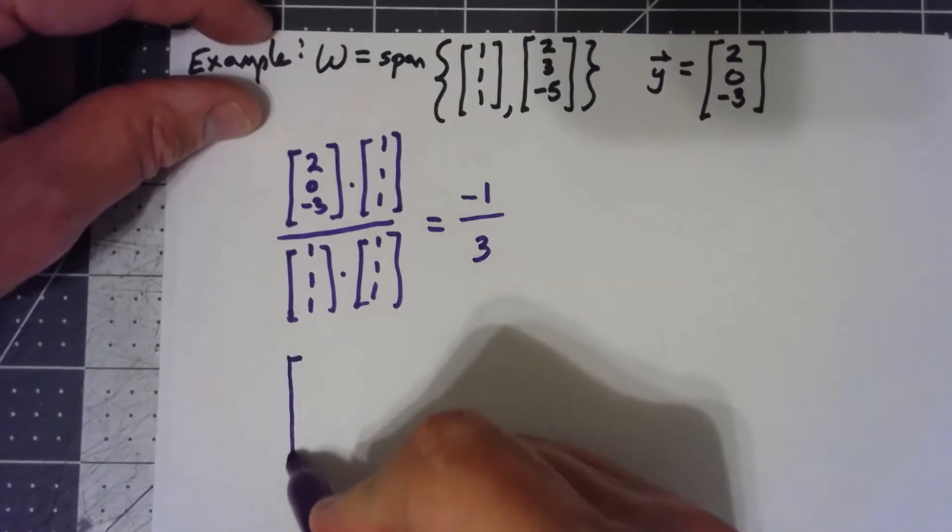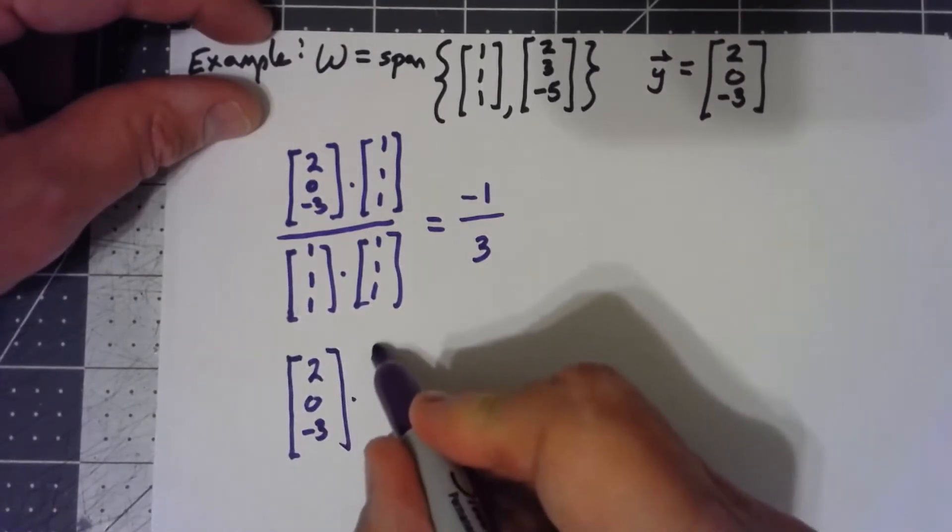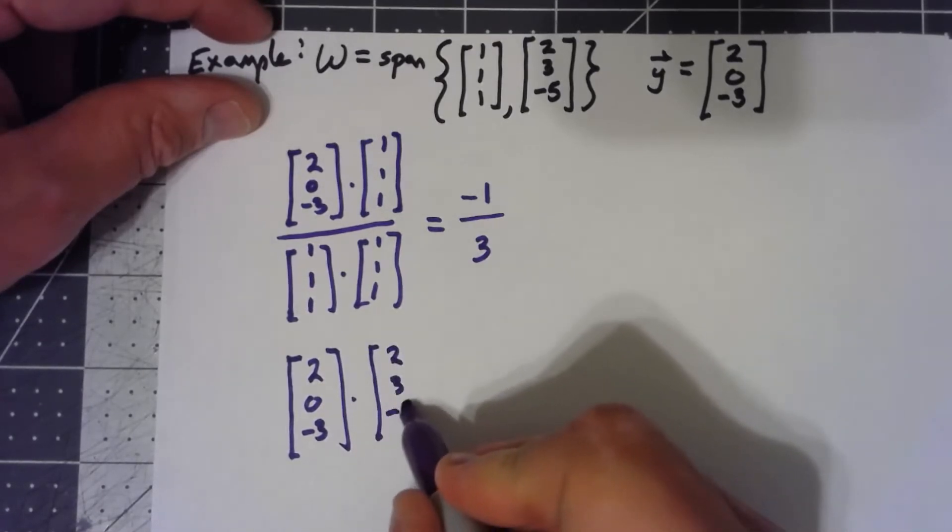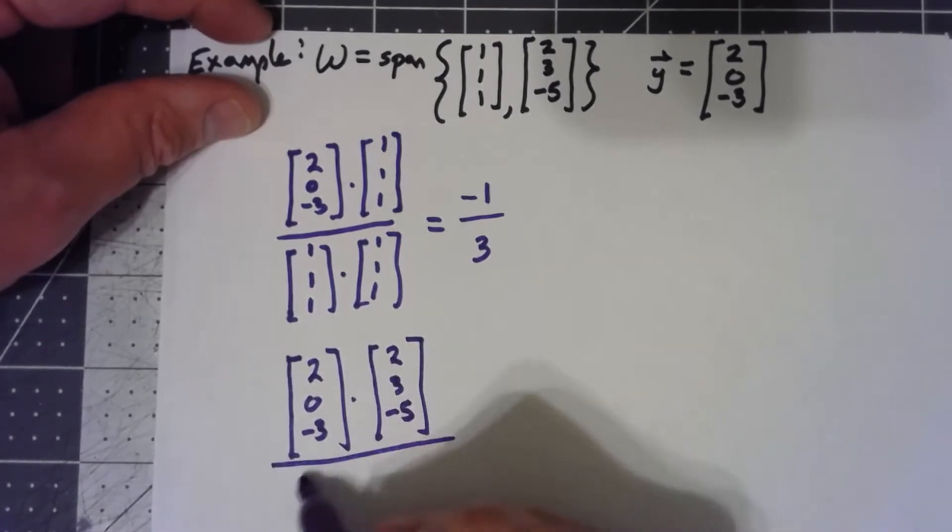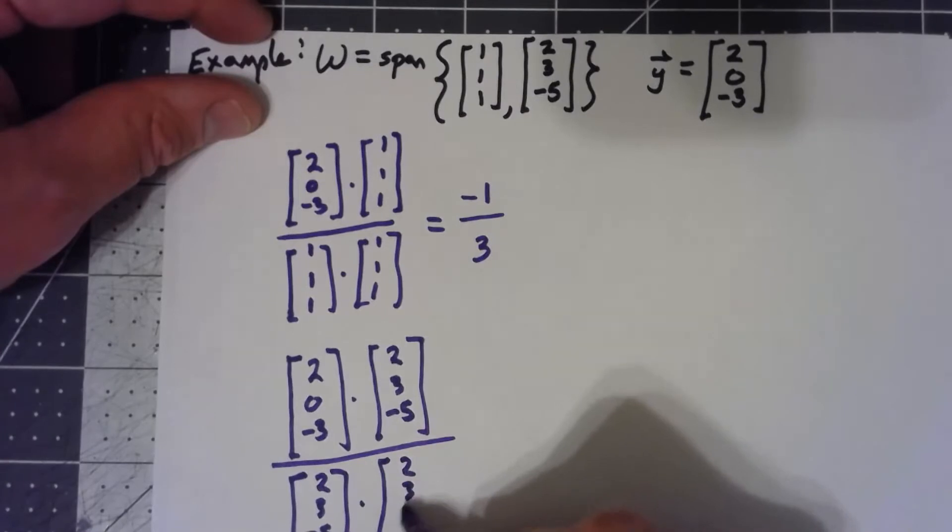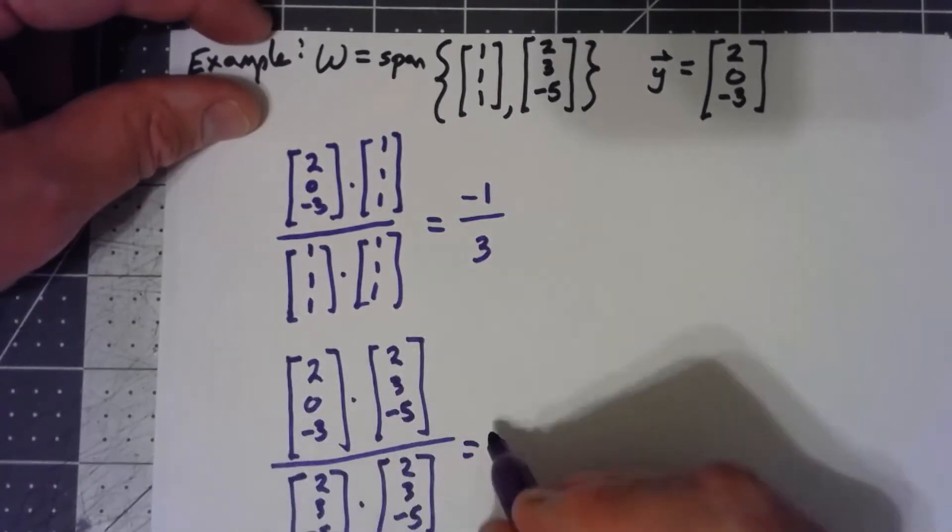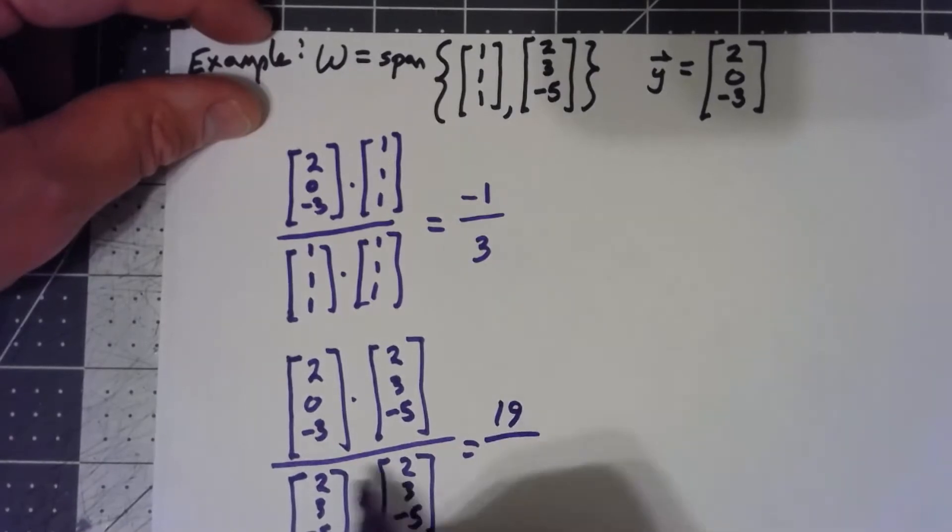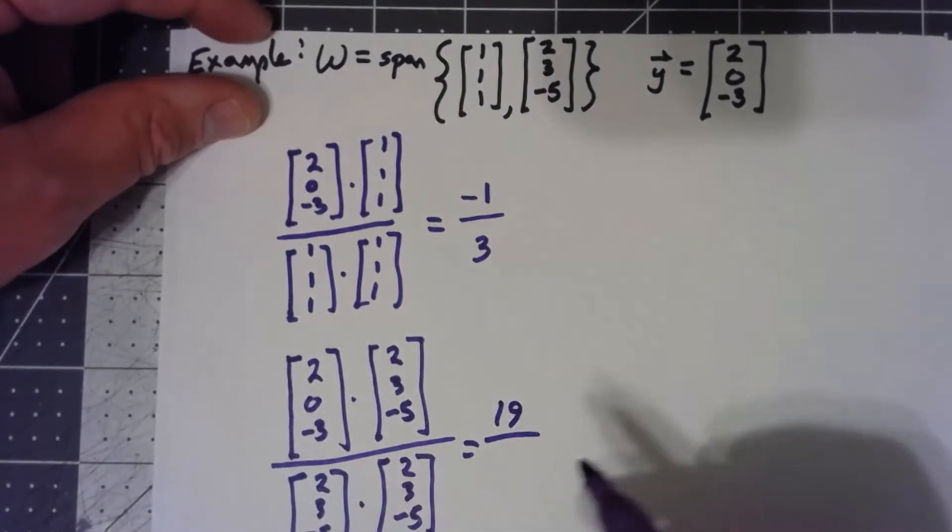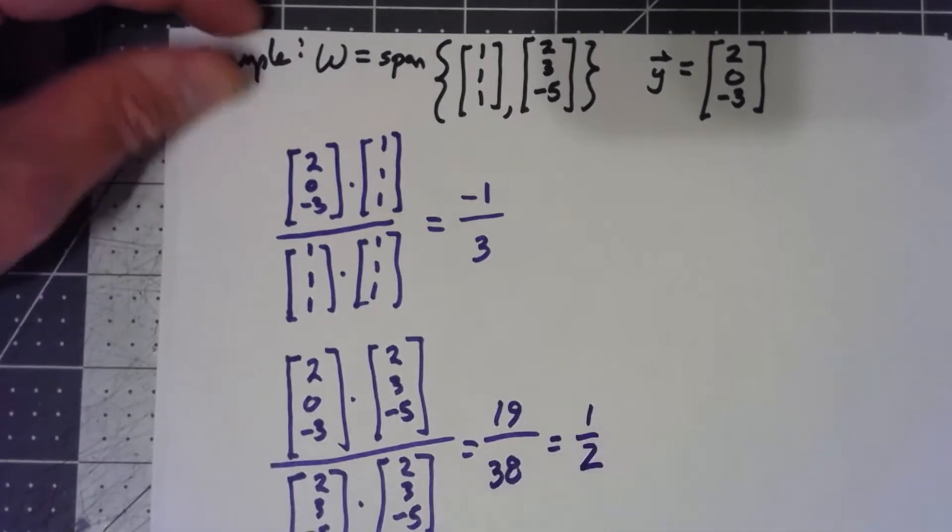Do the same thing with the other one. I start with my (2, 0, -3), and I'm dotting it with the (2, 3, -5), over the (2, 3, -5), dotted with itself. 4 plus 0 plus 15 is 19. 4 plus 9 plus 25 is 38, which simplifies to 1/2.